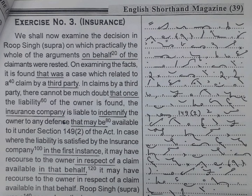We shall now examine the decision in Roop Singh Supra, on which practically the whole of the arguments on behalf of the claimants were rested. On examining the facts, it is found that this was a case which related to a claim by a third party. In claims by a third party, there cannot be much doubt that once the liability of the owner is found, the insurance company is liable to indemnify the owner, subject to any defence available to it under Section 149.2 of the Act. In cases where the liability is satisfied by the insurance company in the first instance, it may have recourse to the owner in respect of a claim available in that behalf.